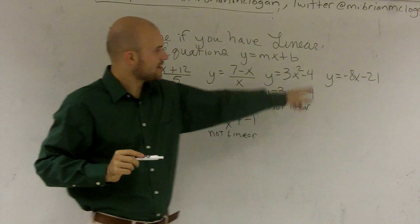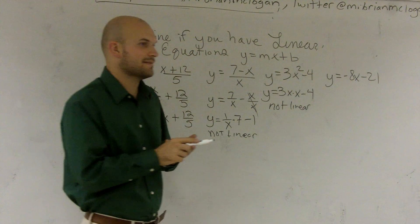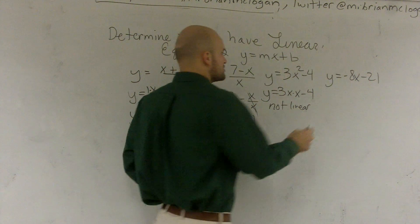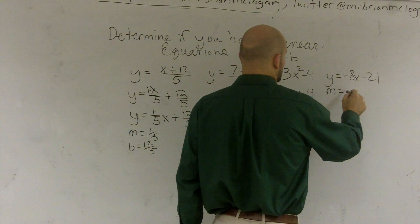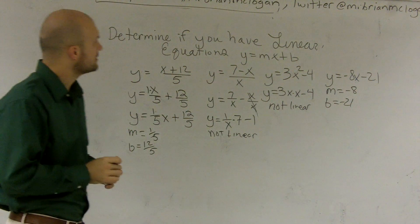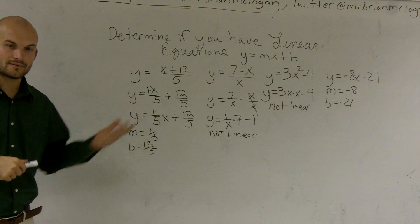And for this last problem, I have y equals negative 8x minus 21. I don't have a variable in the denominator, nor do I have another variable multiplied by another variable. So therefore, I can write m is equal to negative 8 and b is equal to negative 21. And that is linear. So that's how you determine if a linear equation is linear or not.